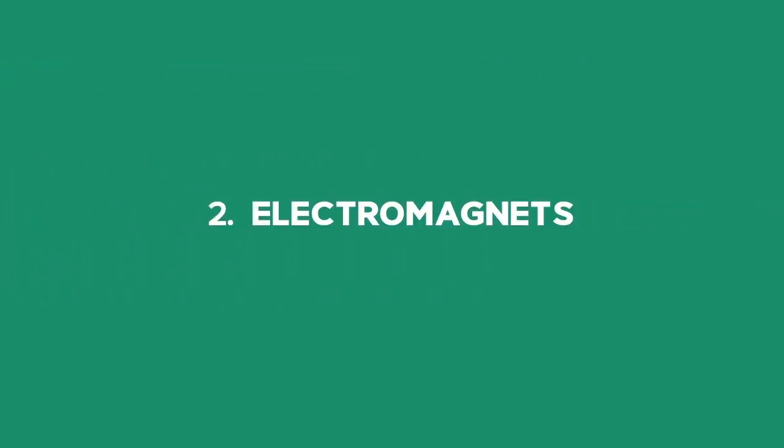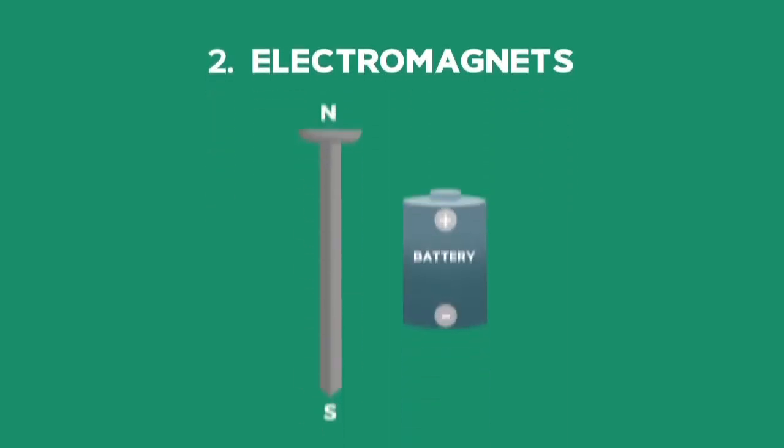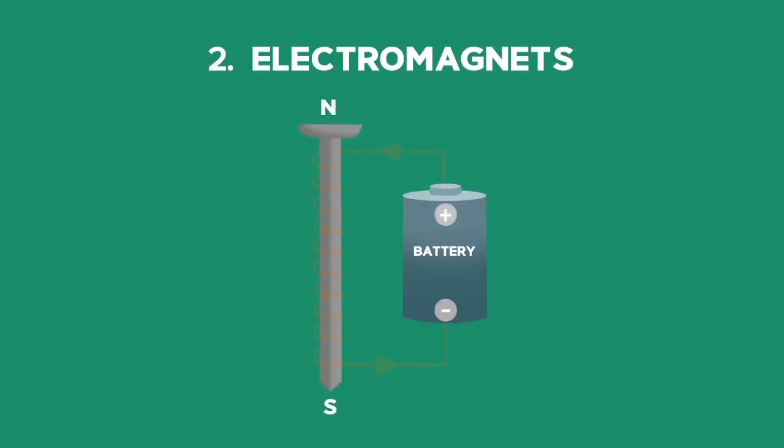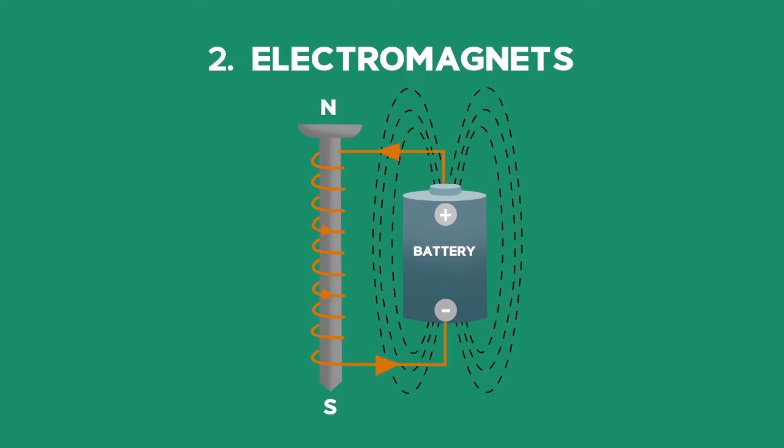Electromagnets are temporary magnets. Around any conductor that has a current flowing through it, there is a magnetic field. Switch off the current and the magnetic field disappears.